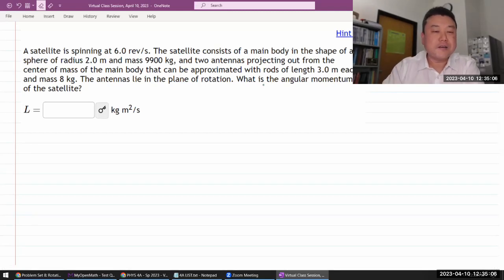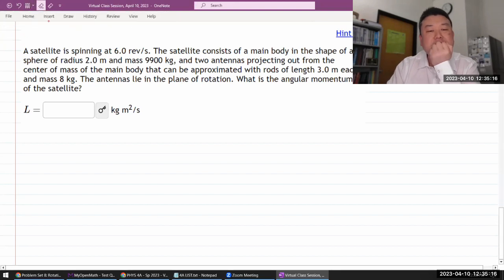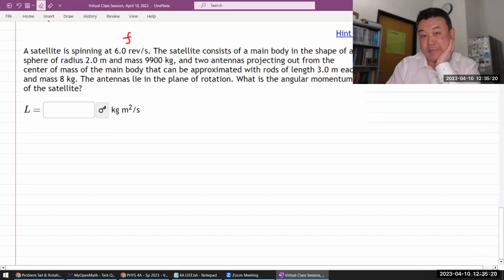This question says a satellite is spinning at some angular velocity. I have to be careful here because they're not actually giving us angular velocity—revolutions per second would be more like a frequency, so we'll have to do a conversion later.